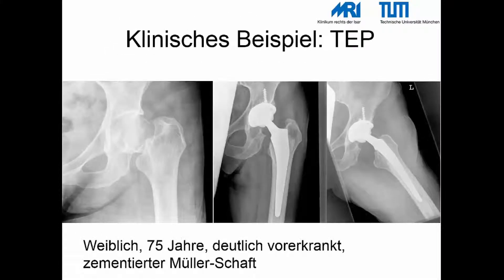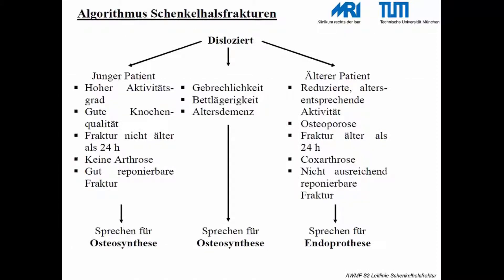Bei vorbestehenden cox-arthrotischen Beschwerden muss die Pfanne ebenfalls ersetzt werden, wie dieses Beispiel zeigt. Da die Patientin deutlich vorerkrankt ist, wurde der Schaft zementiert. Dieser Algorithmus zeigt das therapeutische Vorgehen nach Schenkelhalsfraktur.